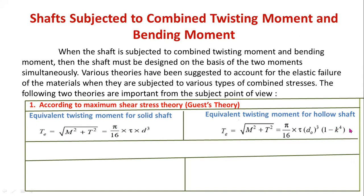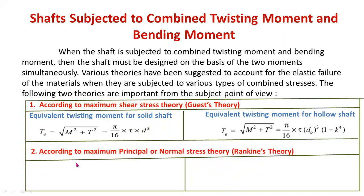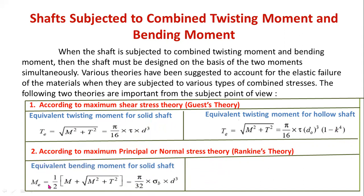The second theory — maximum principal stress (Rankine's) theory — uses the equivalent bending moment M_E. For solid shafts, M_E = ½[M + √(M² + T²)], and this is equated to the bending moment formula: M_E = (π/32) × σ_B × D³.